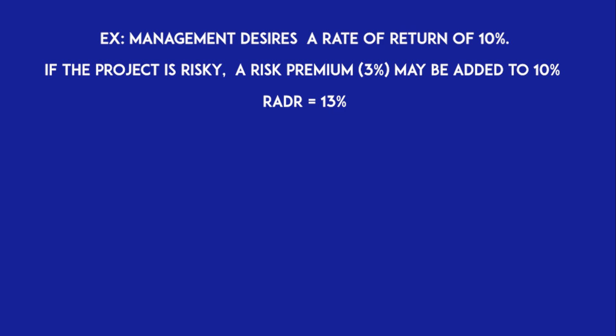There is a limitation for this method — it is not a scientific way of determining the risk premium because it is subjective. Companies usually categorize risks into different levels, such as normal, medium, high, and very high, and calculate a risk range accordingly. How much weight should be assigned to the risk premium depends upon personal judgment. Still, it is one of the best methods for calculating risk in the decision-making process.